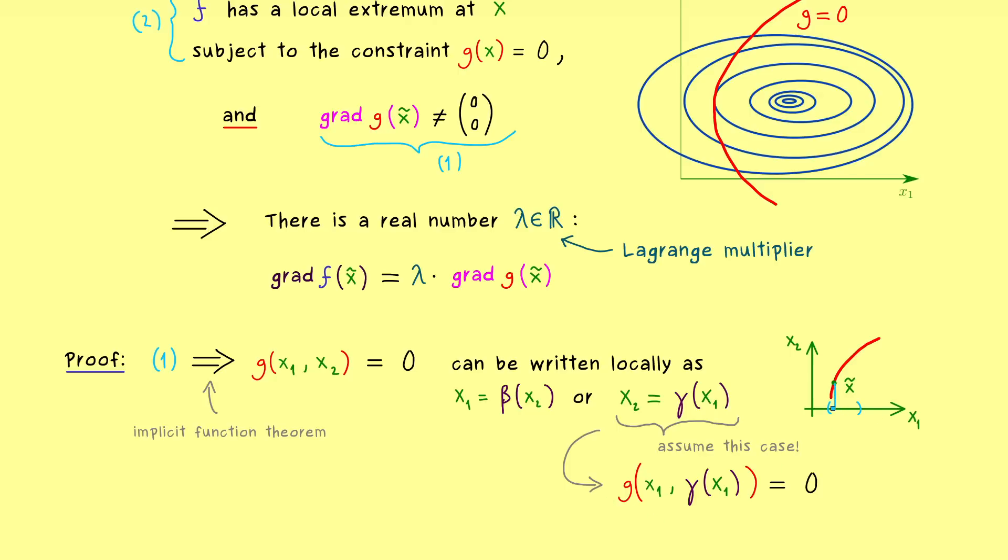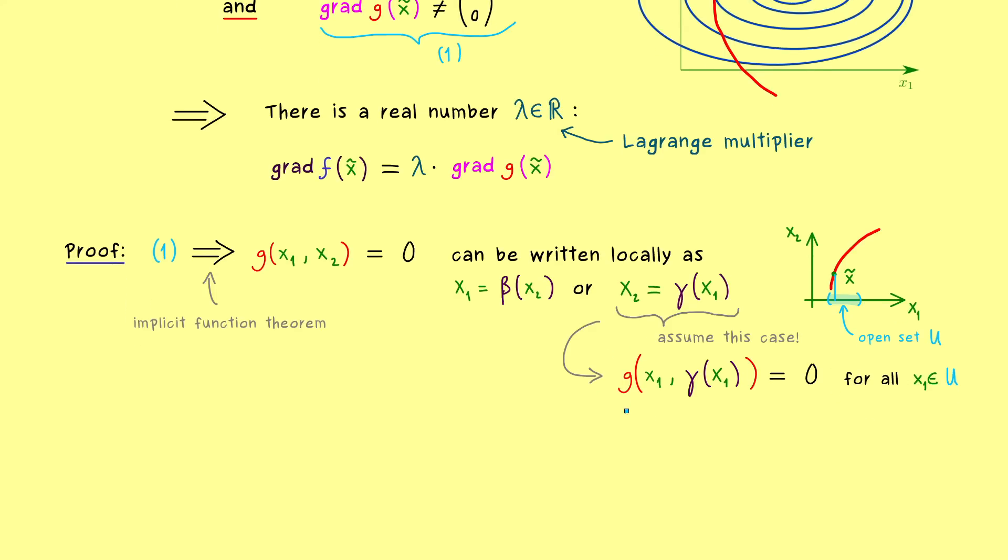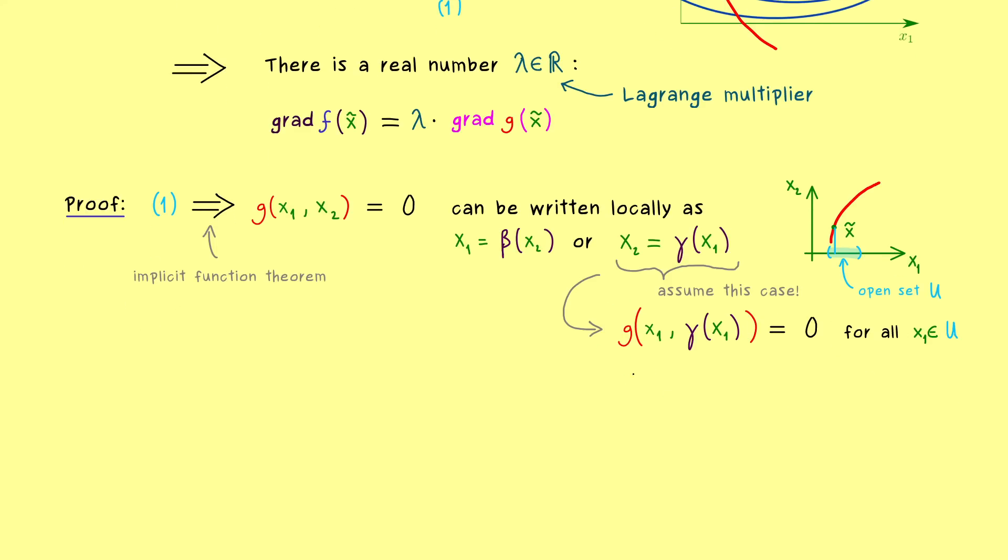The implicit function theorem also tells us we can put function γ into function g. So we have this equals 0 for all x₁ in a neighborhood of x tilde, an open neighborhood in R for x₁. Maybe let's call this open set U. It's not important how big U is, just important that the first component of x tilde lies in this open set U. Then locally around this point everything is nice, and moreover γ is a C¹ function as well.